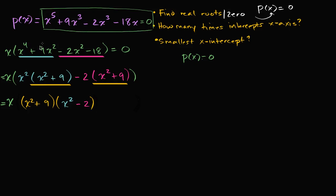So instead of grouping, if we add these middle two terms - actually I'll just focus on the fourth degree polynomial here. We know we have an x out front.